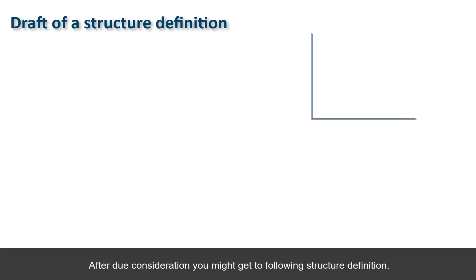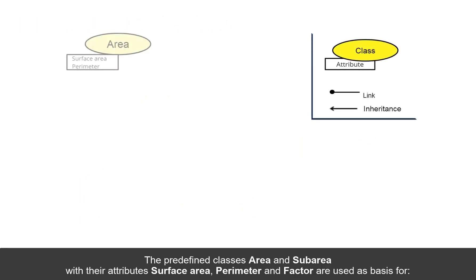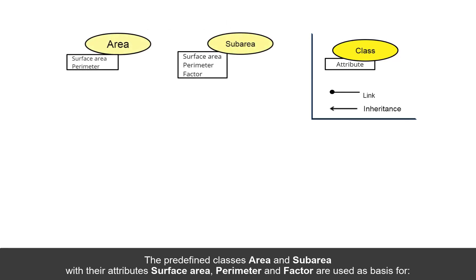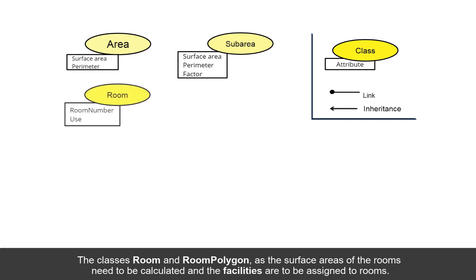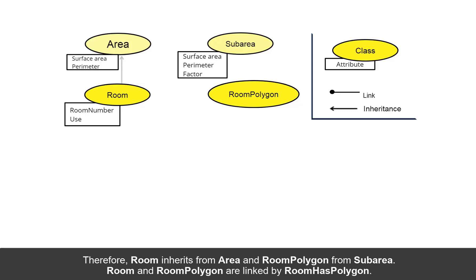Draft of a structure definition. After due consideration, you might get the following structure definition. The predefined classes area and sub-area with their attributes — surface area, perimeter, and factor — are used as basis for the classes room and room polygon, since the surface areas of the room need to be calculated and the facilities are to be assigned to rooms. Therefore, room inherits from area and room polygon from sub-area.